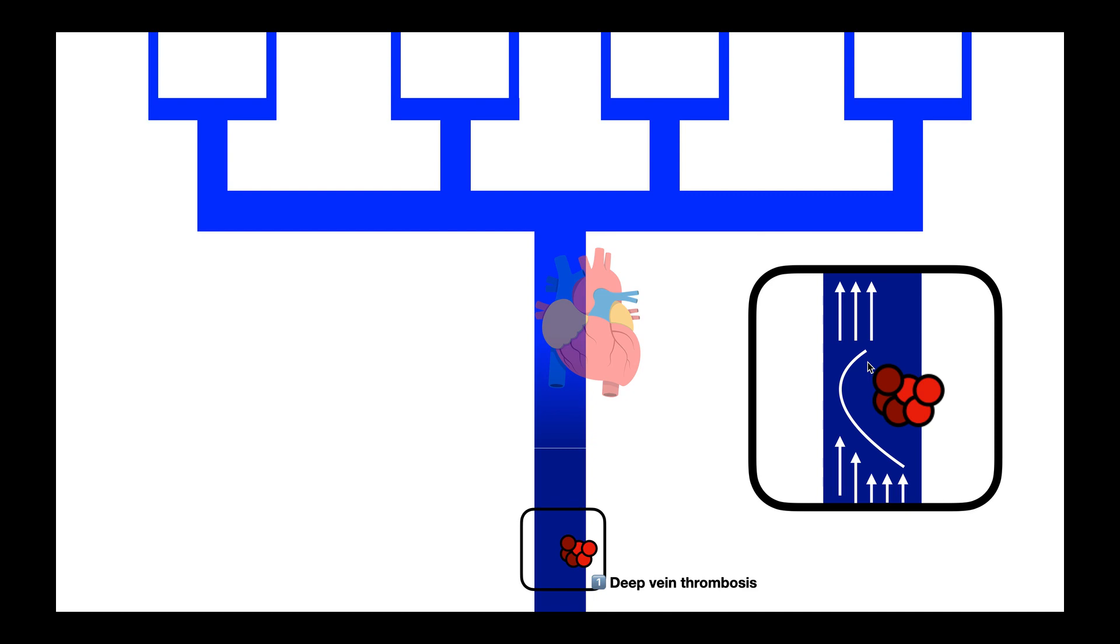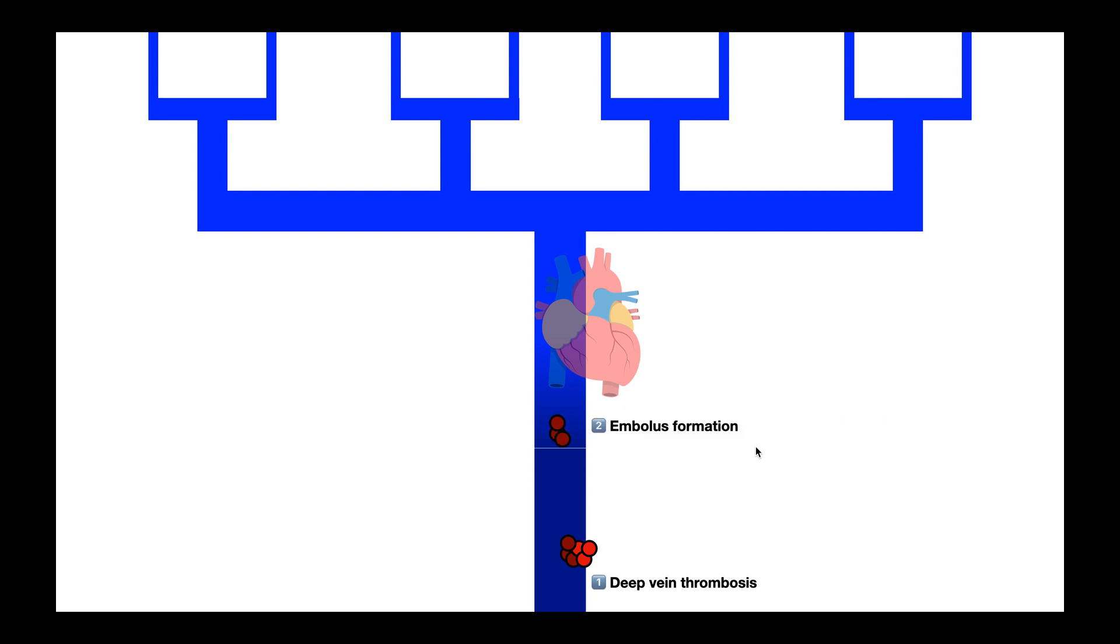What becomes problematic is if a portion of this blood clot breaks off and is now free floating in the blood. So these circles here that are dark red, this portion of the DVT, the blood clot, it's going to break off. And that process of breaking off is called embolizing. And the resulting fragment that's now floating free in the blood is called an embolus. This embolus literally goes with the flow. It goes wherever the bloodstream takes it.